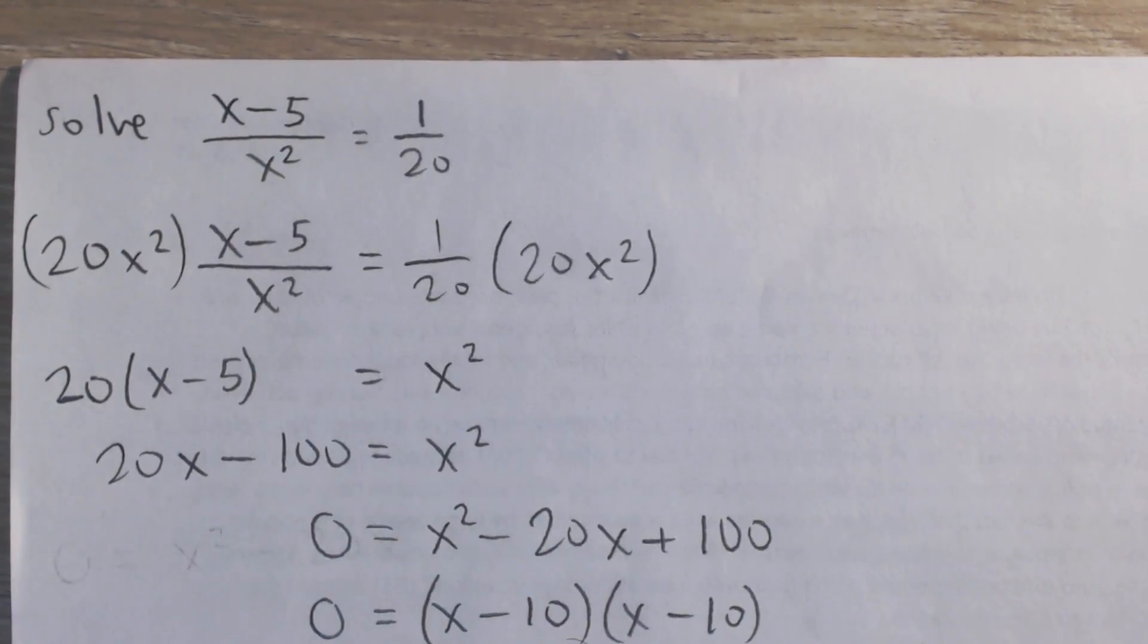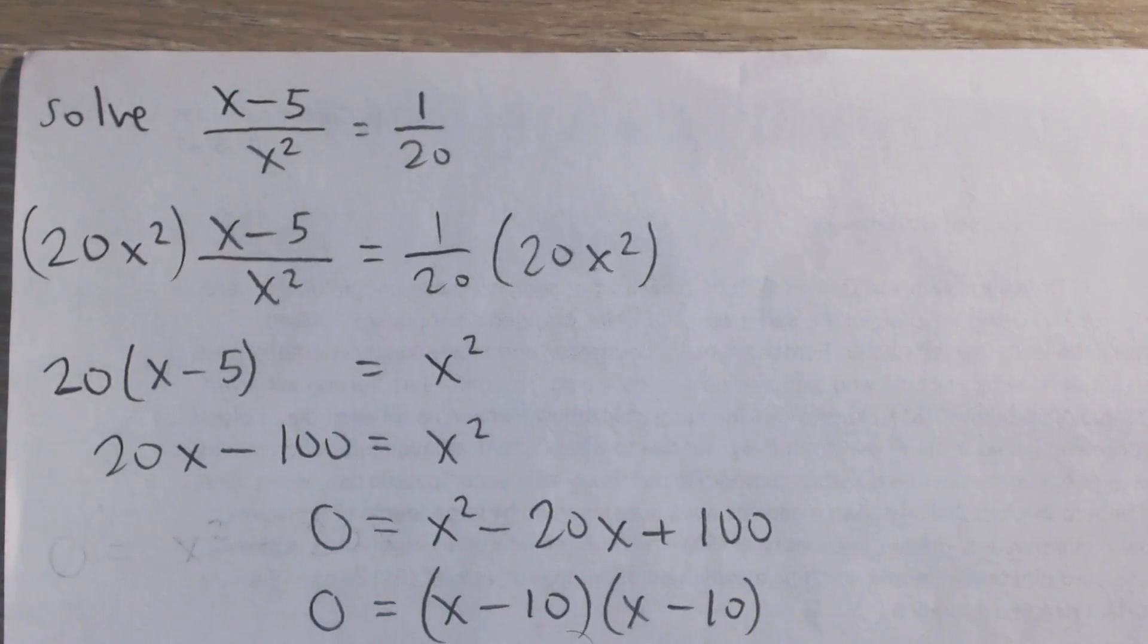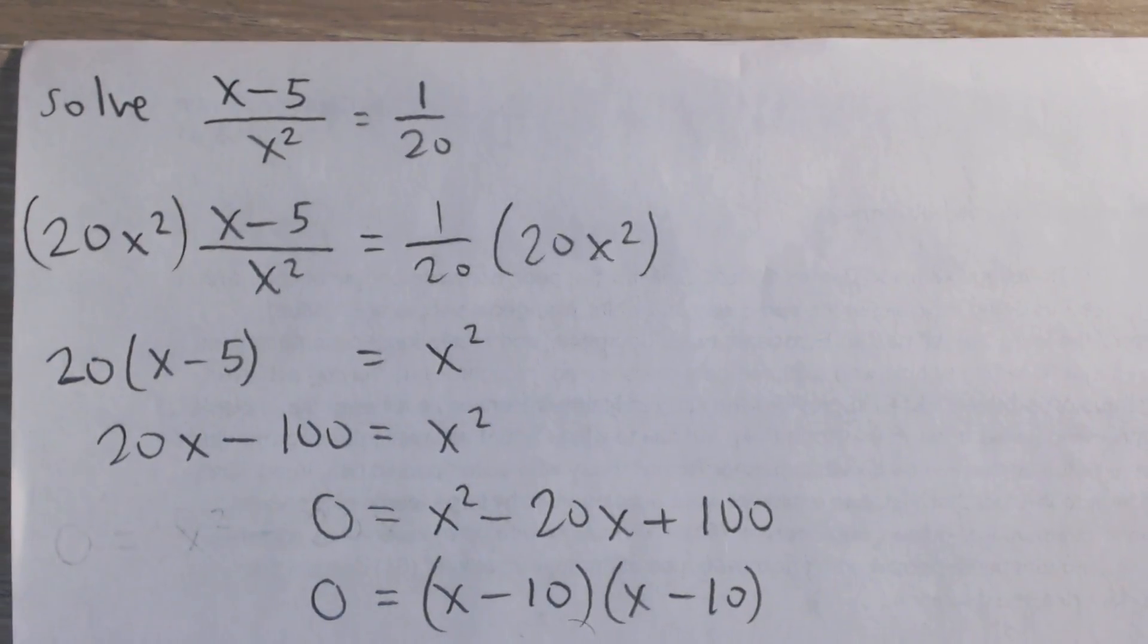And now you can see we have a quadratic equation. And so to solve this, we want to move all the terms to one side, so the other side will be equal to 0.